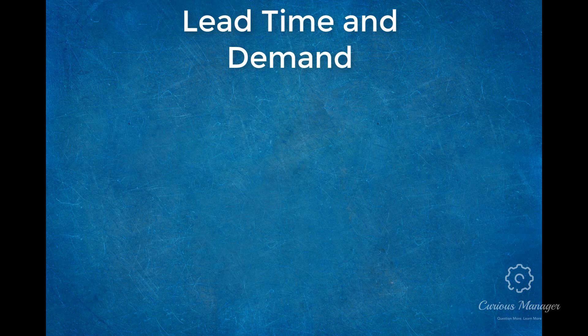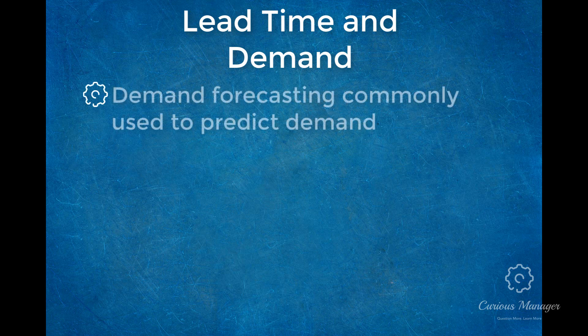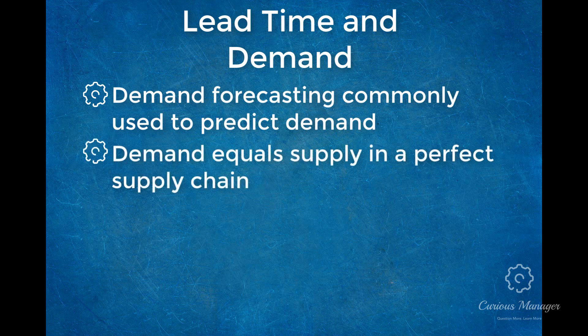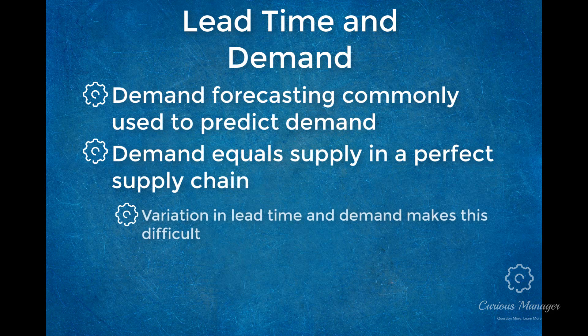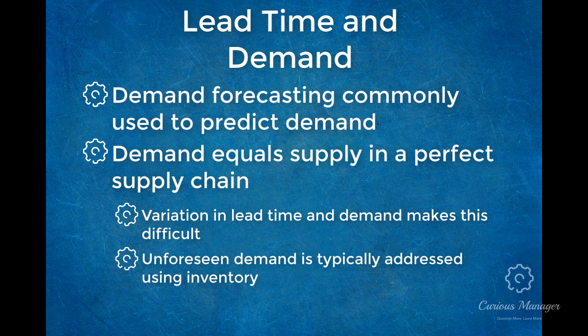Demand within the supply chain is usually met using demand forecasting. In an ideal world, supply should equal demand, but due to lags in demand forecasts and variation in lead times, this is rarely the case. Even when using a just-in-time supply chain strategy, in which the product is manufactured and available only when the demand is made, there may be instances in which additional inventory is required.